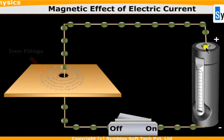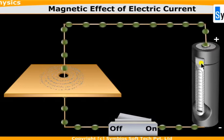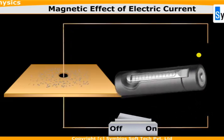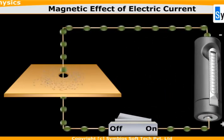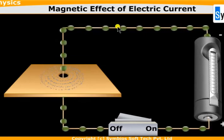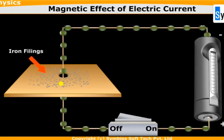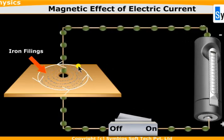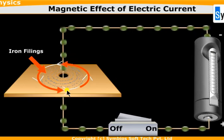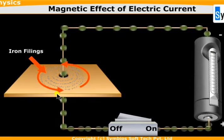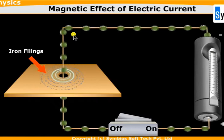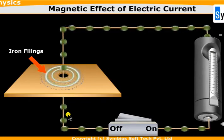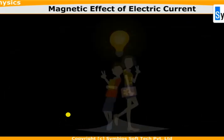Now let's reverse the direction of current by changing the battery direction. Whenever current flows in a different direction, we again get concentric circles of iron filings, but this time the iron filings circulate in an anti-clockwise sense. We can conclude that whenever current flows through a conductor, a magnetic field is created around it - that is the magnetic effect of electric current.